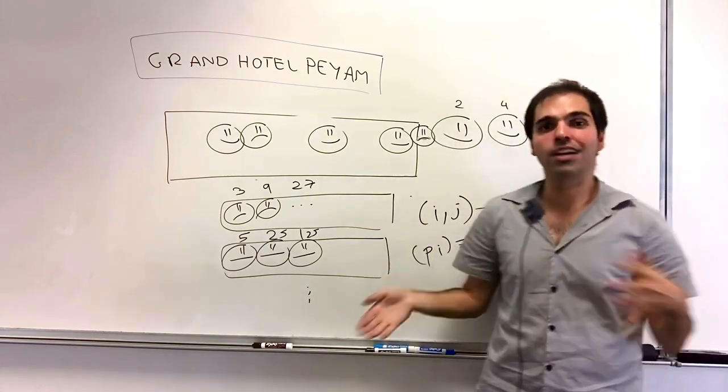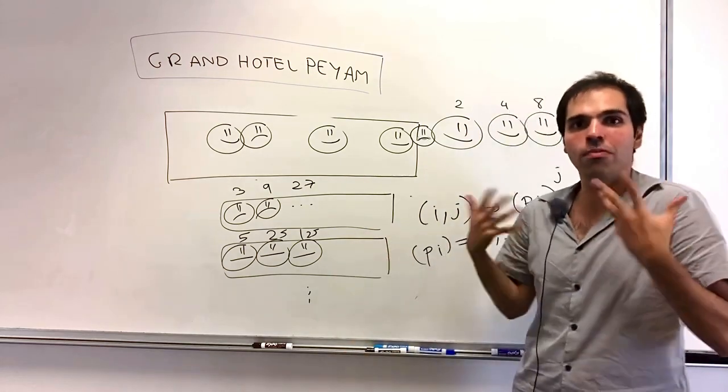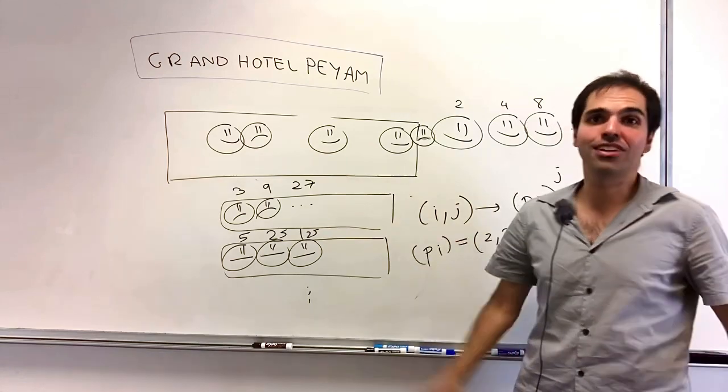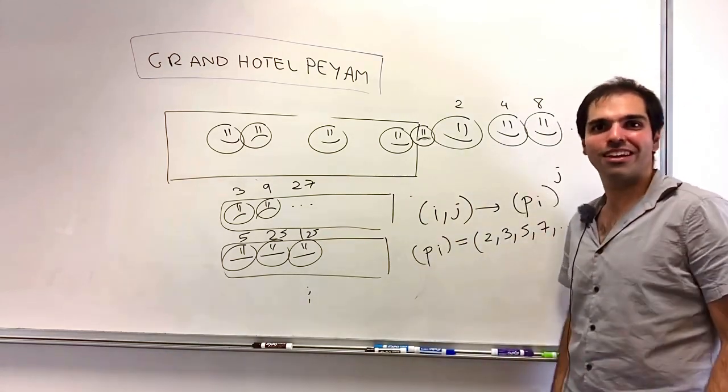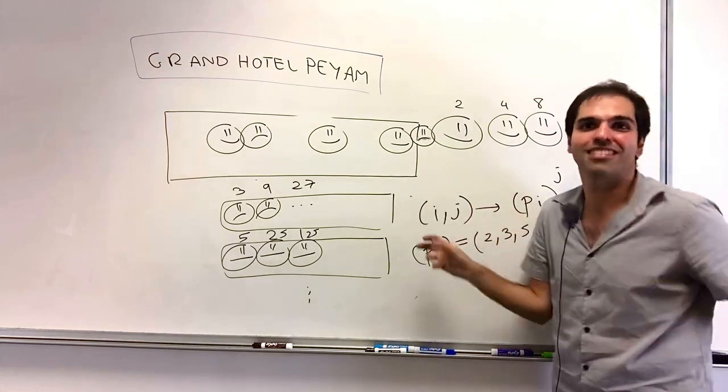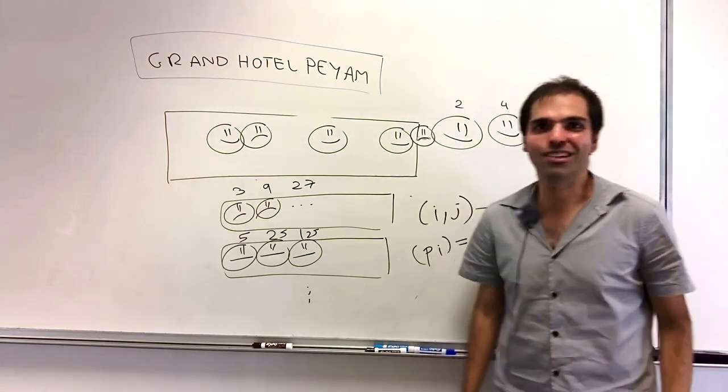And again, mathematically, what it shows is that the countably infinite union of countably infinite sets is still countable. But, of course, everything breaks down if you have uncountable sets, like a continuous bus. Yeah. That would be kind of weird.